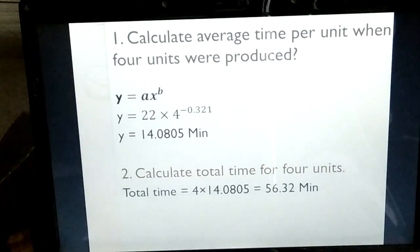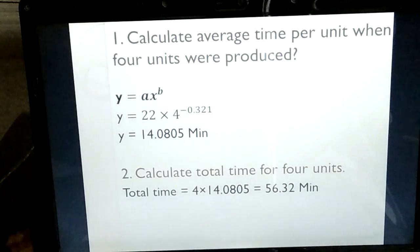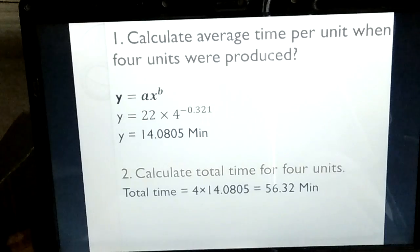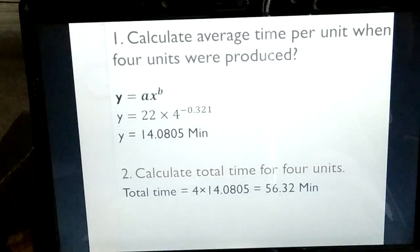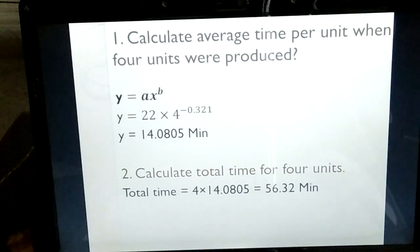For requirement two, we calculate the total time for four units. We know the average time per unit for four units is 14.0805 minutes. So we simply multiply by four and we get the total time for four units, which is 56.32 minutes.